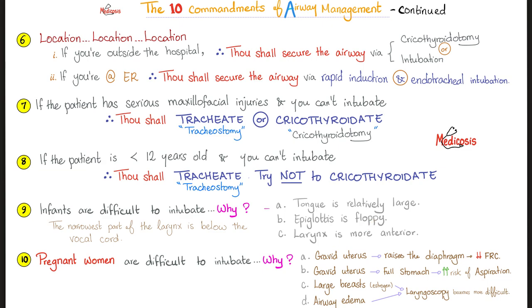The narrowest part of the larynx in infants is below the vocal cords. Number ten: pregnant women in general are difficult to intubate. Why? The gravid uterus pushes the diaphragm upwards, decreasing the FRC — functional residual capacity. The gravid uterus is also pressing on the stomach, increasing the risk of aspiration. Aspiration is something not intended to go into the trachea going into the trachea — from the mouth, esophagus, or stomach.